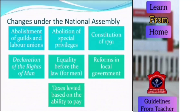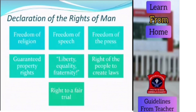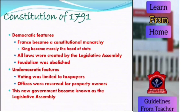Changes under the National Assembly included abolishment of guilds and labour unions, abolition of special privileges, formation of a constitution, and framing of the Declaration of the Rights of Man — including equality before the law, but only for men — along with reforms in local government and taxes levied based on ability to pay. The declaration included freedom of religion, speech and press. France became a constitutional monarchy; the king was just a head of state. A Legislative Assembly was established, feudalism was abolished, and voting rights were given only to those paying taxes and owning good properties.